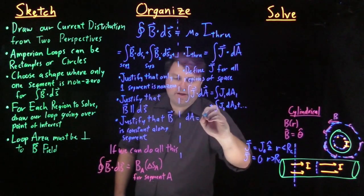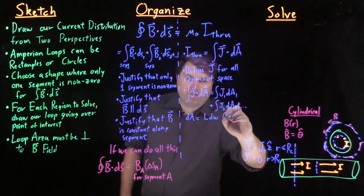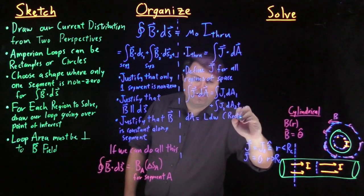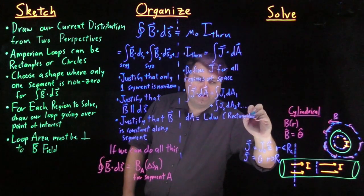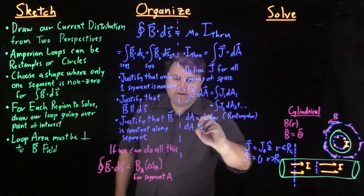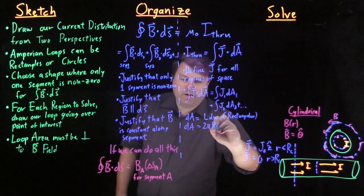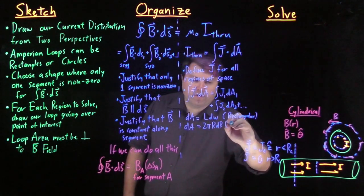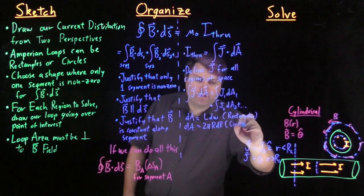And just as a reminder, our dA is equal to L dW for rectangular, and our dA is equal to 2 pi r dr for surface.